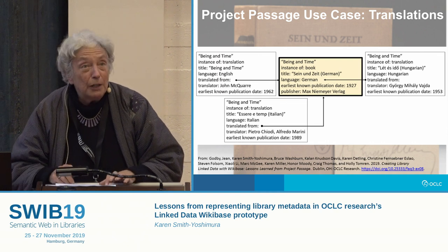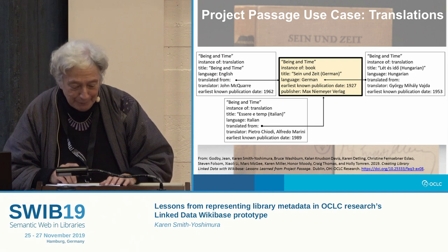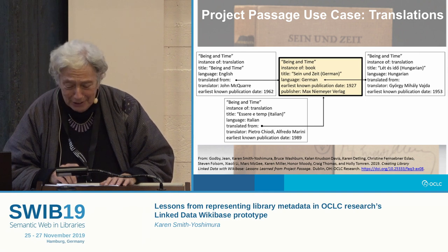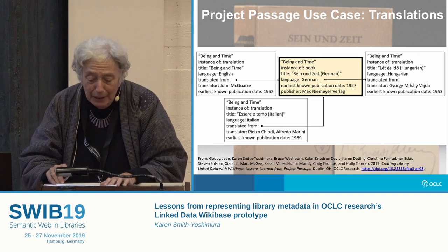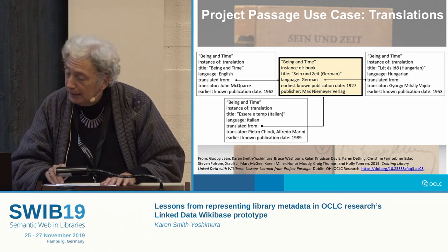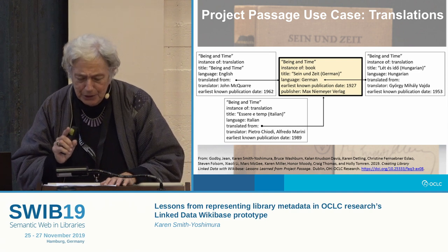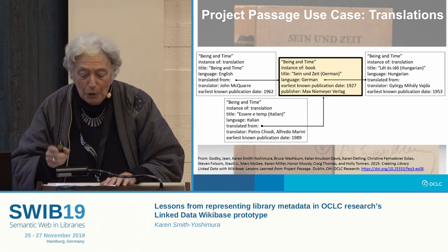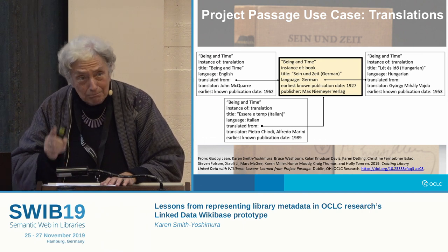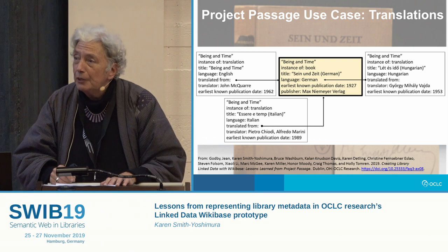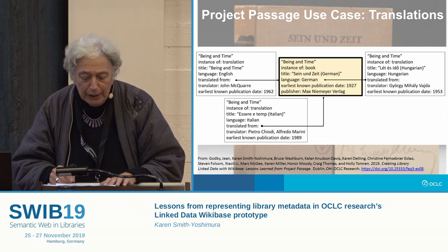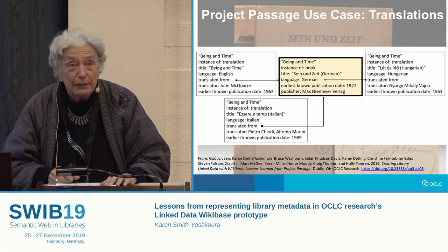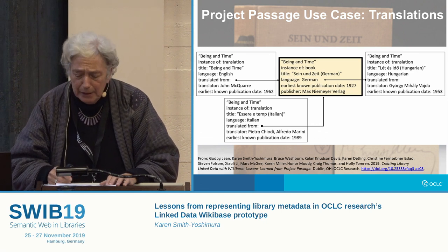Translations were one of the first Project Passage use cases and a homework assignment. We imported from WorldCat 37 different translations of Heidegger's Sein und Zeit. Each translation was its own entity with the property 'translated from' linked to the original German work. There was a temptation to also add 'translated to' to the entity of the original work, but that would mean re-editing that entity each time a new translation was added. Instead, the Explorer interface showed that adding the inverse relationships was not needed, and people could see the results of their entries without leaving the metadata creation workflow.